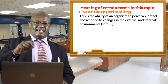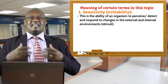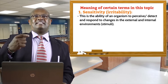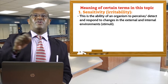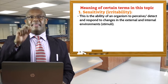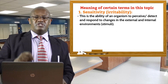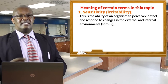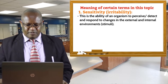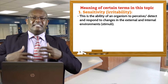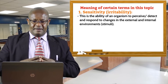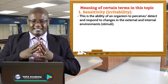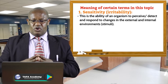Remember what we said in the introduction — an organism must detect changes in the internal or external environment and respond to those changes appropriately so that it can survive in that given environment. When it is able to do this, we say that it has sensitivity, or irritability.